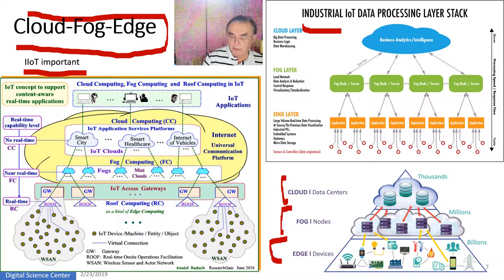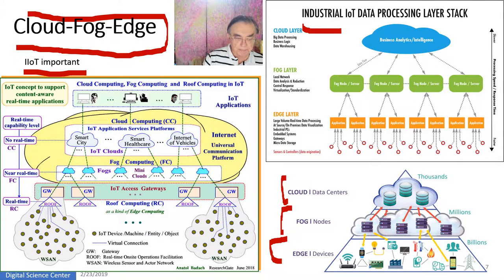Basically everybody agrees on what's going on. You have a whole set of devices. You have some nearby computers. And actually, the clouds themselves can be arranged hierarchically — with a cloud in Indianapolis feeding into clouds in Chicago and things like that — because the cloud itself is distributed. This particular person's vision includes roof computing, which has wireless networking and so on.